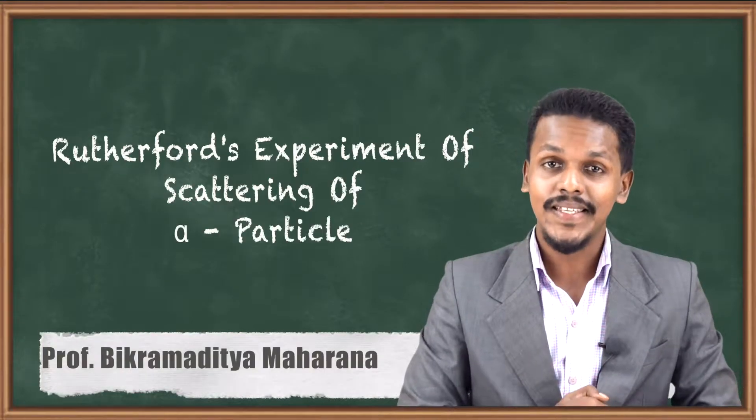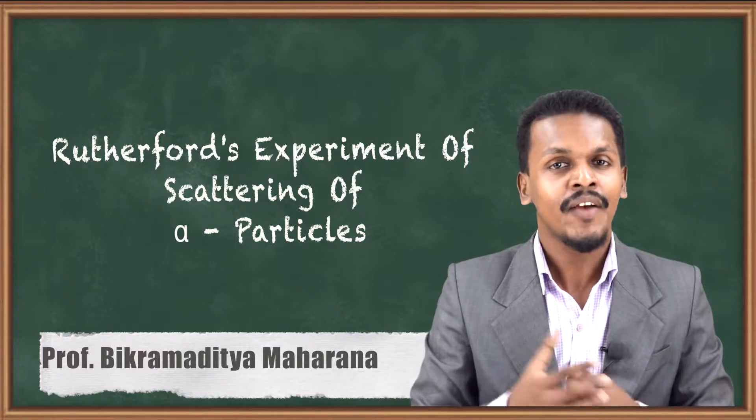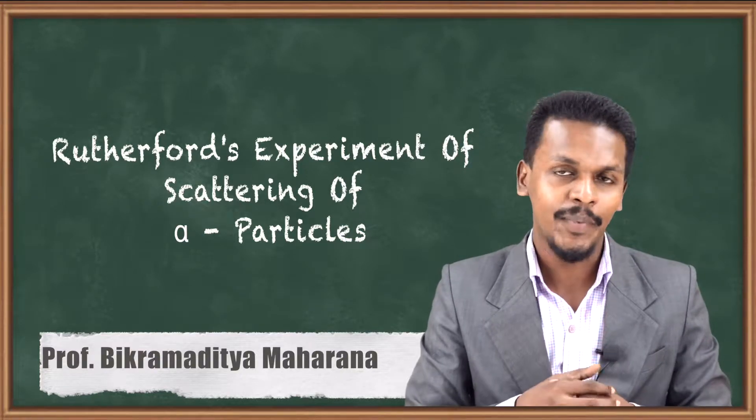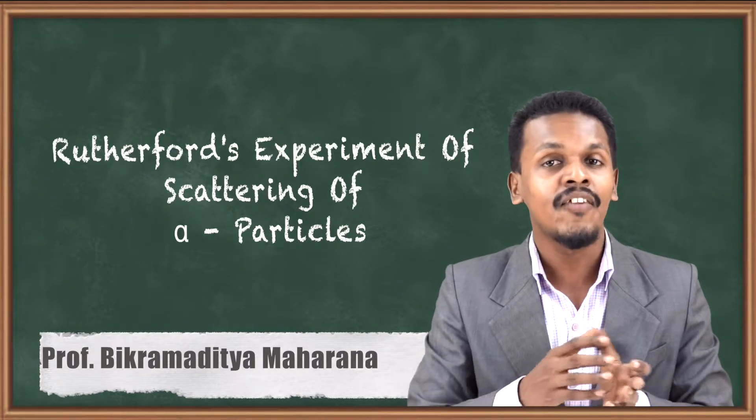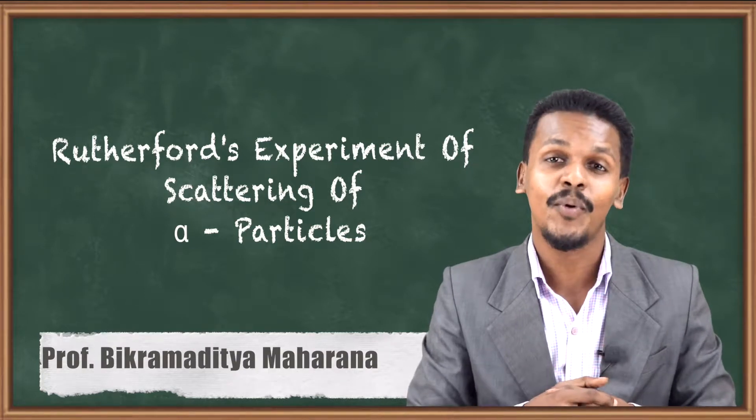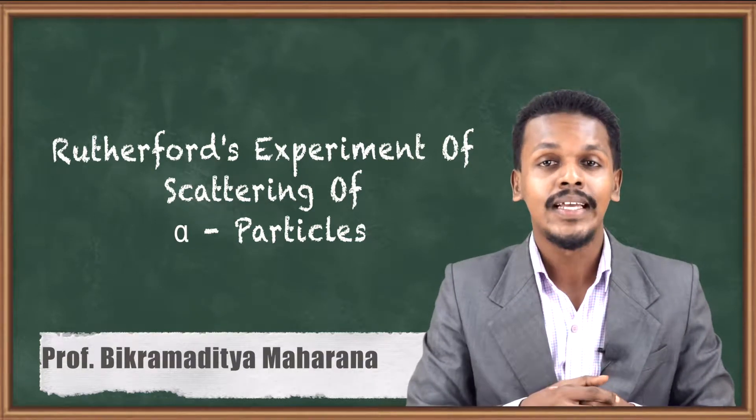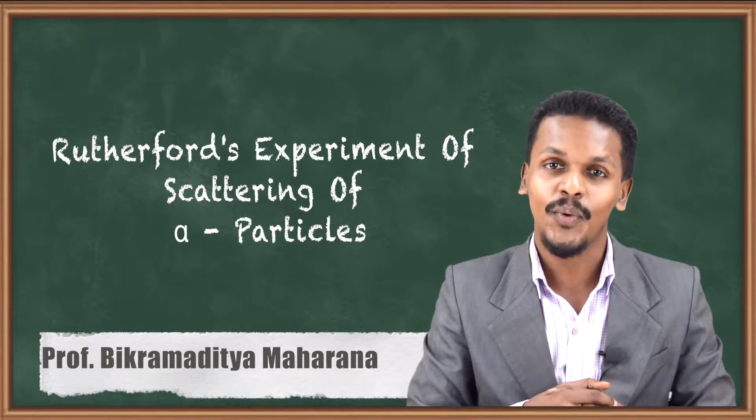Hello friends, in the previous topic we discussed the atomic model of J.J. Thompson, in which we got to know about the various limitations. One of the limitations was the alpha particle scattering which was not explained in J.J. Thompson's model. So here we are going to talk about Rutherford's experiment for the scattering of alpha particles.